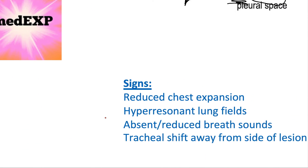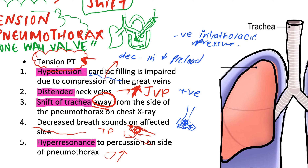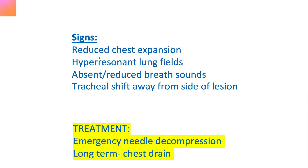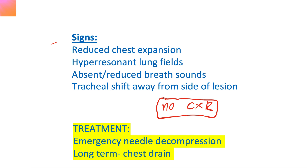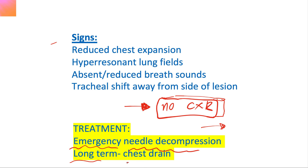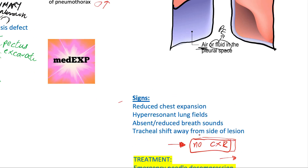Remember: in tension pneumothorax, the key features are hypotension, distended neck veins, and tracheal shift. Other signs to look for are reduced chest expansion, hyper-resonance, absent breath sounds, and tracheal shift. In patients with suspected tension pneumothorax, we do not go for a chest X-ray first — because it's already too late. We need to immediately get that air out of the pleural space with an emergency needle decompression. Long-term solutions include a chest drain.